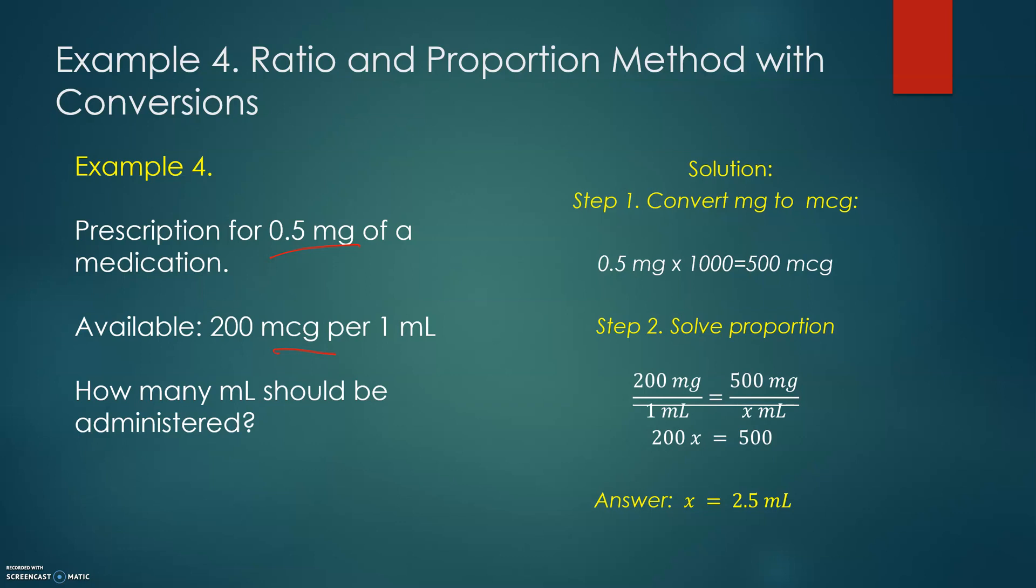Why do we choose mg to microgram? Because remember we discussed that usually the order has to be converted or suggested to convert to available. And if we are converting from mg to microgram, it's from larger unit to smaller unit. We are multiplying by 1000, and we are shifting the decimal point 3 units to the right. And that will be 500 mcg.